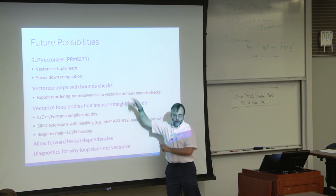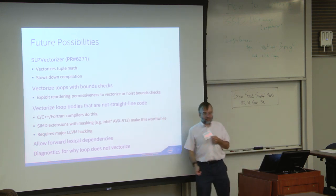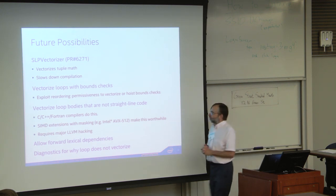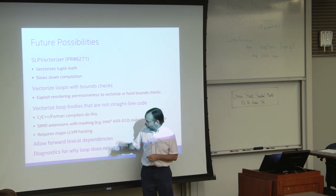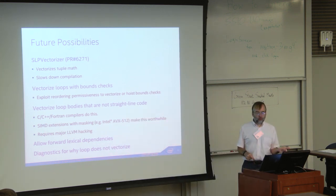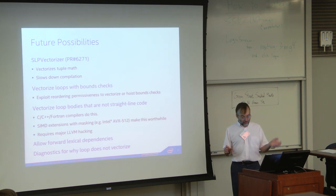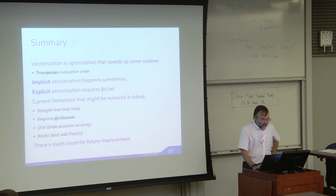I'd love to get rid of the @inbounds requirement and vectorize the bounds checks — that's in the spec and written a way to allow that. Vectorizing loops that are not straight-line code would be really nice; the Intel compiler can now take loops with multiple pages of code, ifs, elses, and switches, and vectorize them. Forward lexical dependencies would be really nice too, but it's a performance hit because I have to run the loop twice instead of a single loop. And some diagnostics explaining why a loop doesn't vectorize would be really nice to teach programmers how to write vectorizable loops.